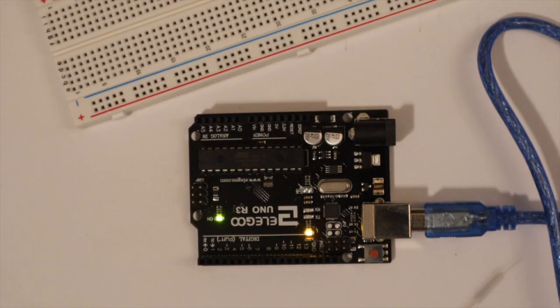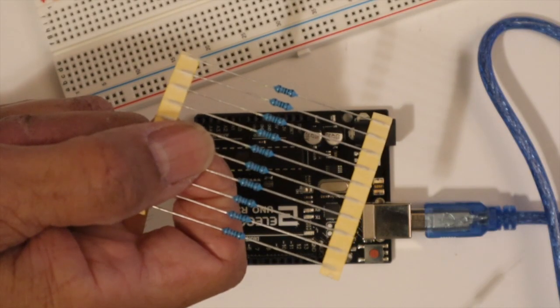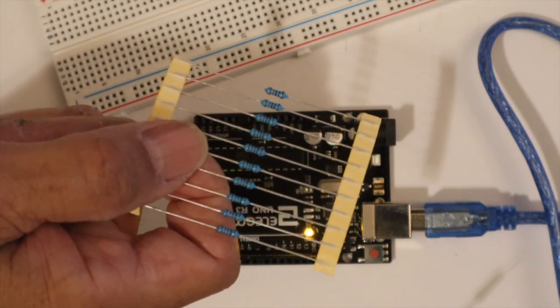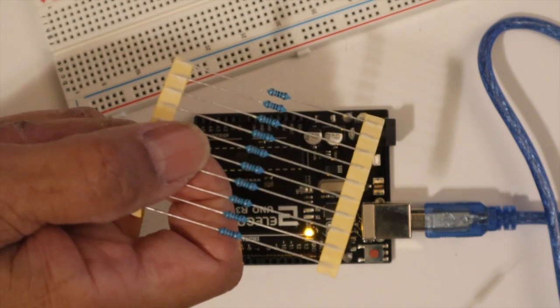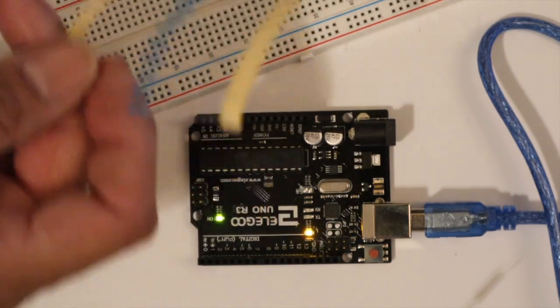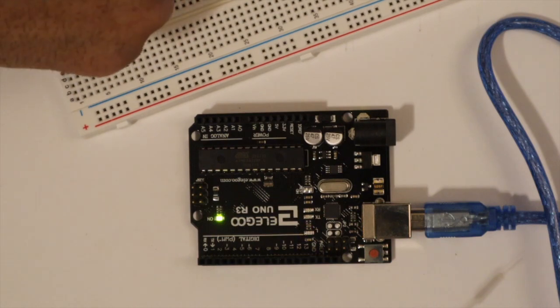And then what we're looking at is you're going to need something called resistors. These are what resistors look like. On all of these, they have color bands. So the ones you're going to be after ordering are 1 kiloohm, 10 kiloohms, and 220 ohms.